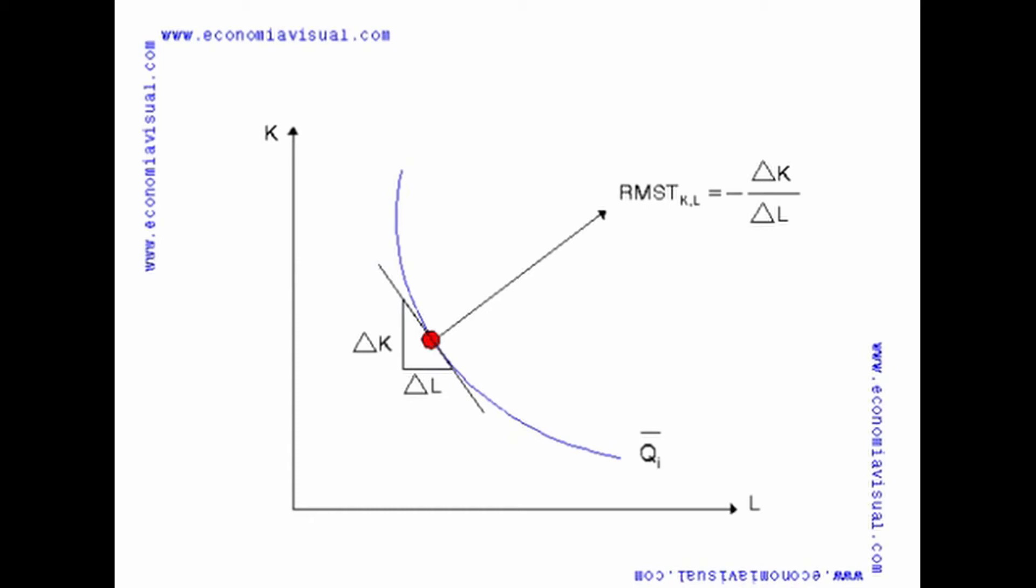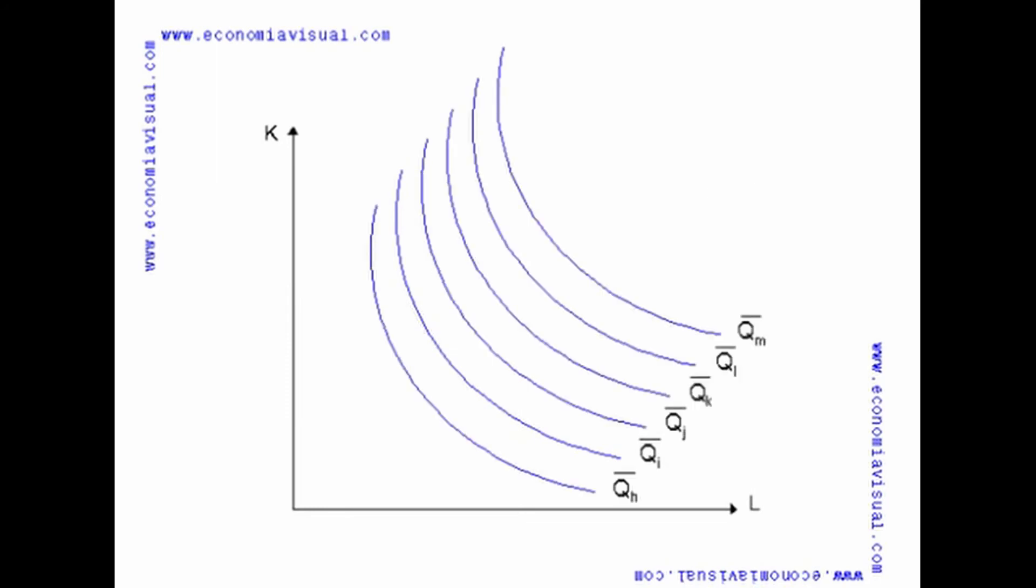Since the levels of production that I can consider are infinite, infinite would be the Isoquants that would represent them. If we take a certain level of capital K*, we can see how as we move to the right of the plane each Isoquant would reflect a production method with the same amount of capital but with more work.